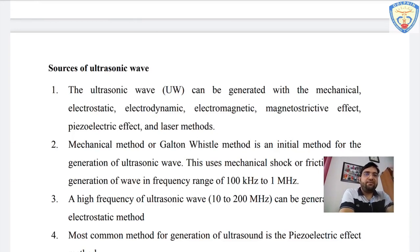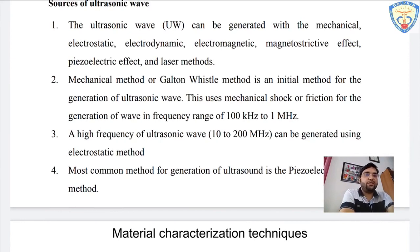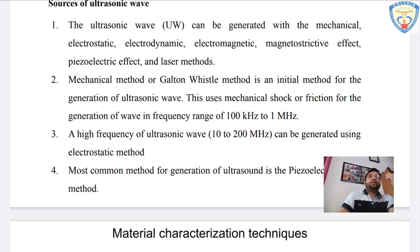The Galton whistle method is the initial method for the generation of ultrasonic waves — a very primary method. Mechanical shock or friction generates waves in the frequency range of 100 kilohertz to 1 megahertz. Higher frequencies of ultrasonic waves — up to 20,000 megahertz — can be generated using electrostatic methods, where an electrostatic impulse is applied to the material with attenuation provided by the instrument.